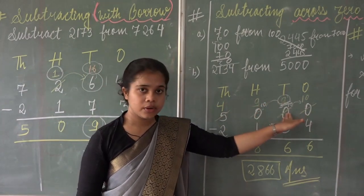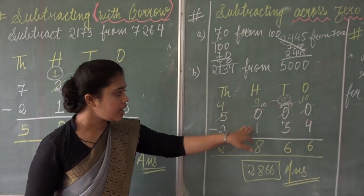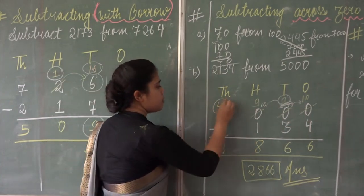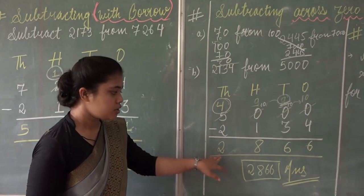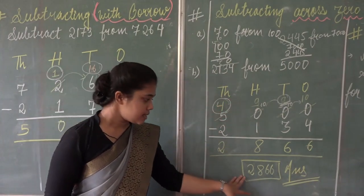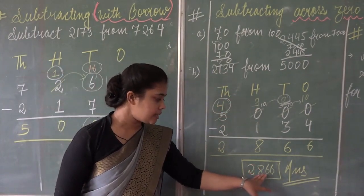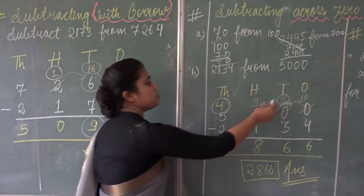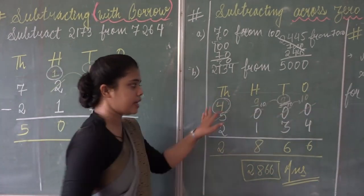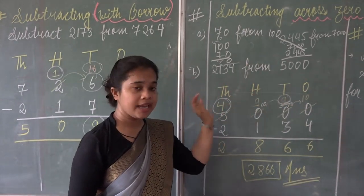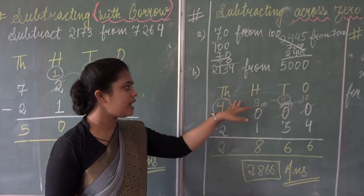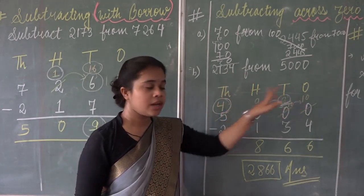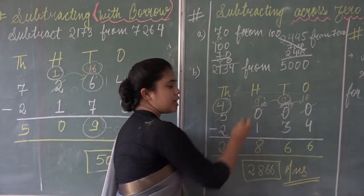This 0 also gave 1 to the next 0, so 9 minus 1 is 8. And here it becomes 4 minus 2, which is 2. So the result is 2,866. It is not necessary to show all these steps — you can keep the borrowing in your mind.